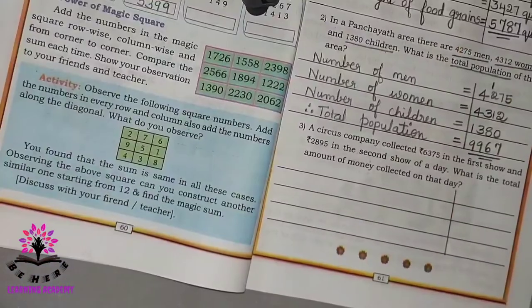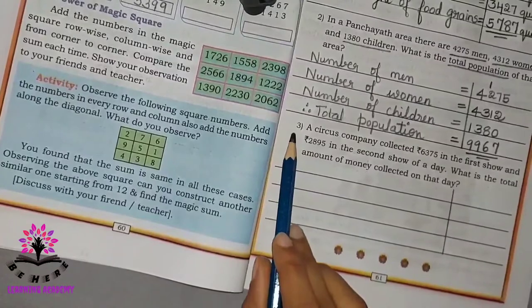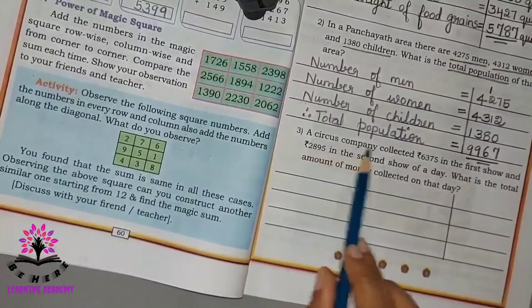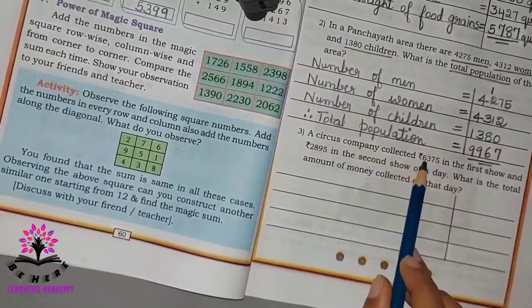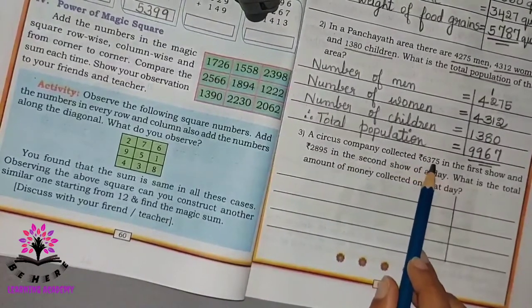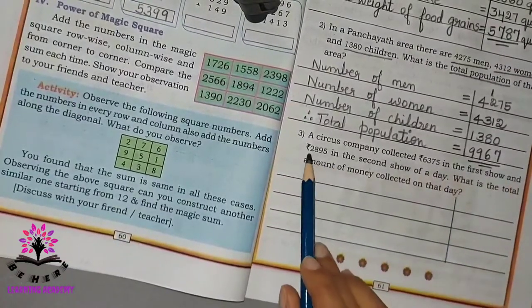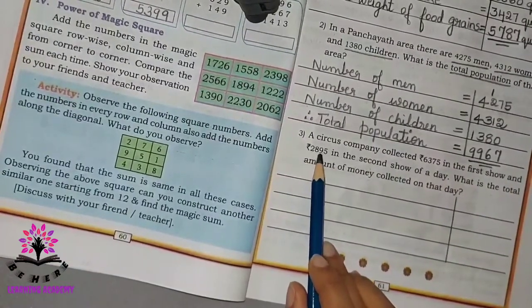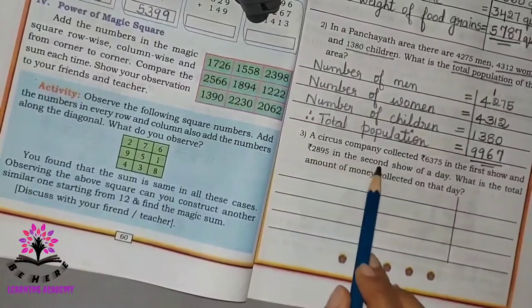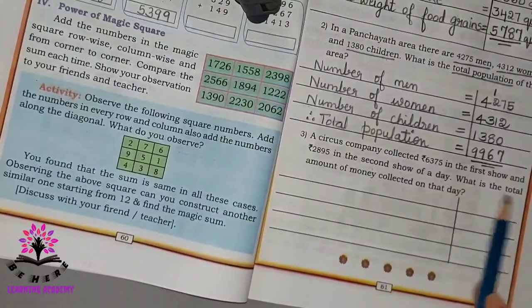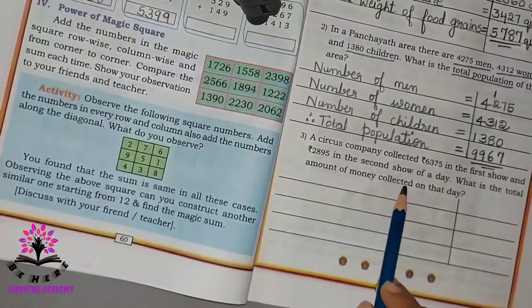Underline the answer. Third problem: A circus company collected Rs. 6,375 in the first show and Rs. 2,895 in the second show of a day. What is the total amount of money collected on that day?